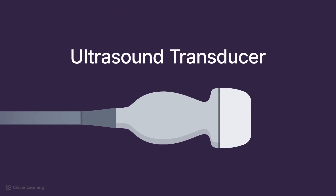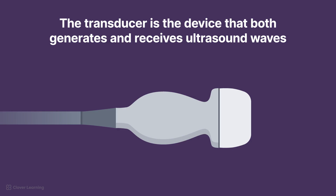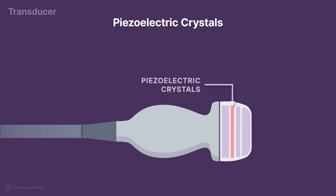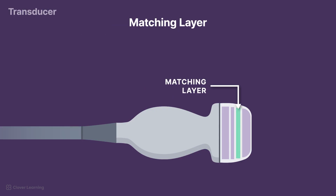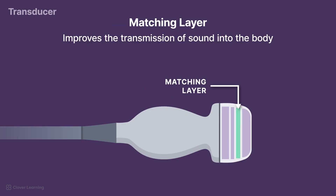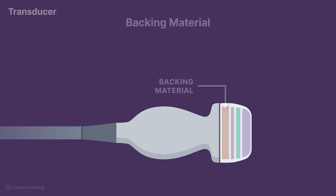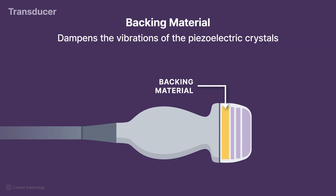Let's take a closer look at an ultrasound transducer. The transducer is the device that both generates and receives ultrasound waves. Its basic parts include piezoelectric crystals, which convert electrical energy into mechanical sound waves and then turn the echoing sound waves back to electrical energy again. A matching layer improves the transmission of sound into the body. Backing material located behind the crystals dampens the vibrations of the crystals.